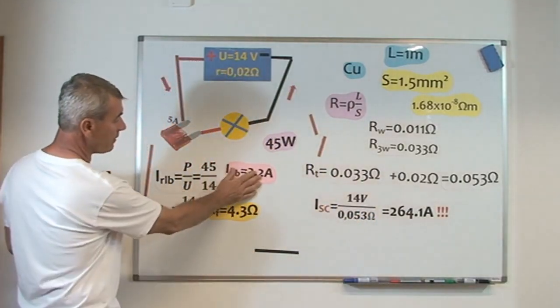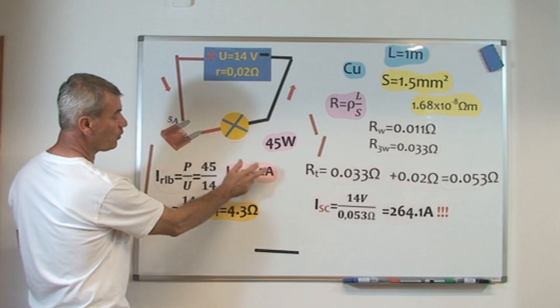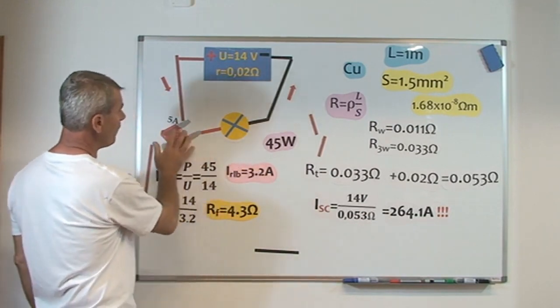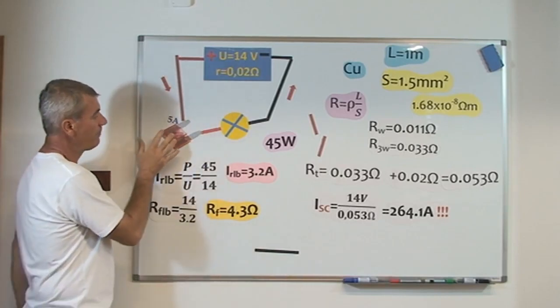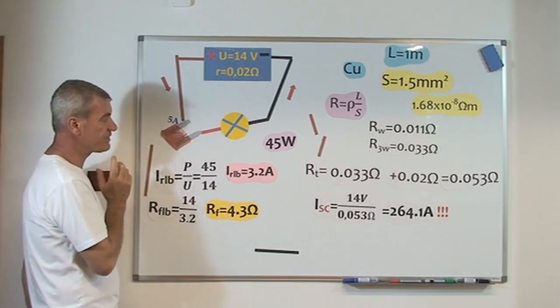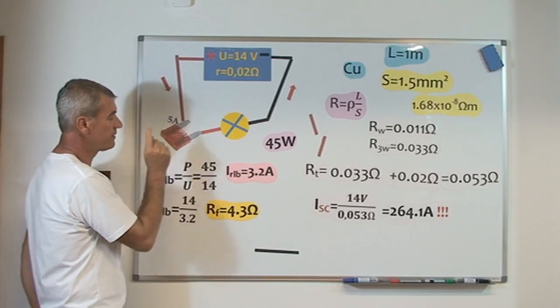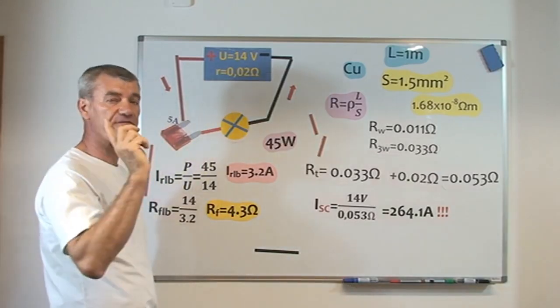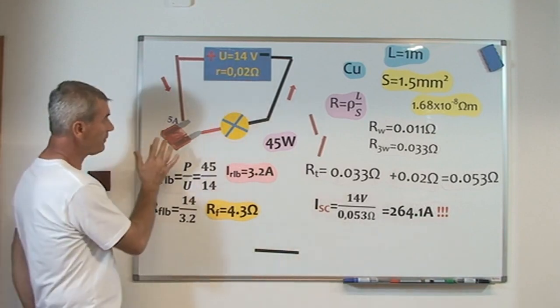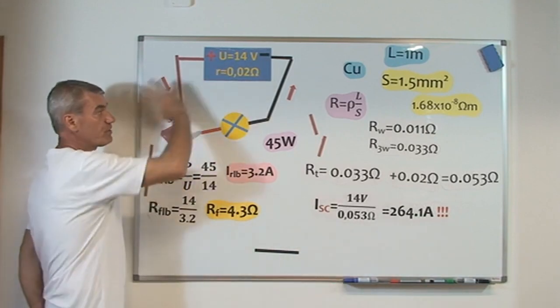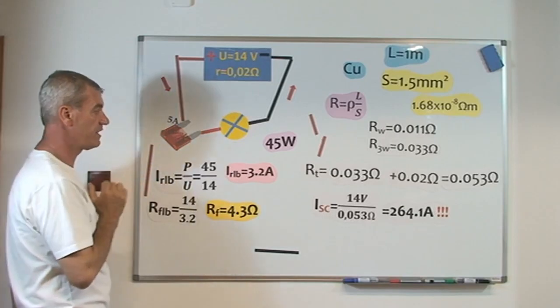I see here, I have 3.2 amps for this light bulb, and I fix here 5 amps. I don't fix 7.5 amps, because I want the fuse to block quickly to protect my car circuit.